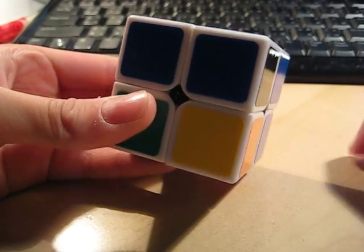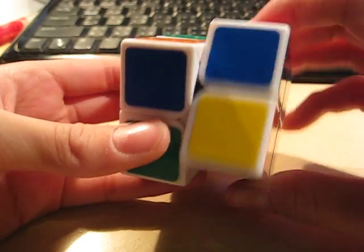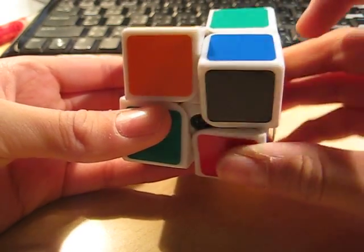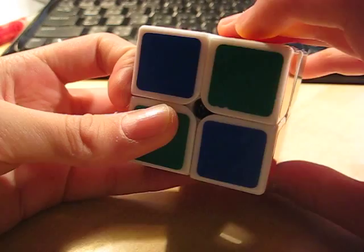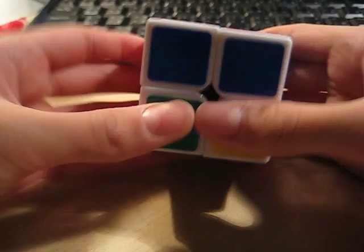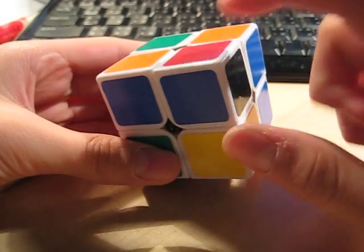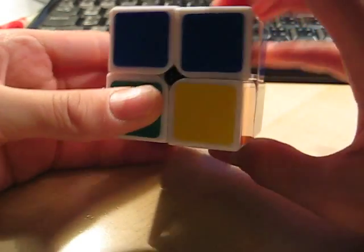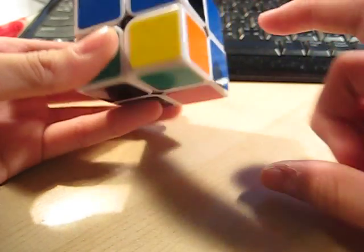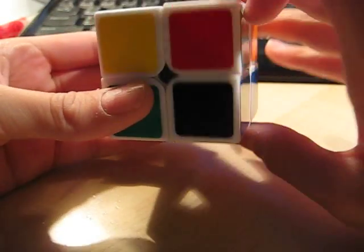And then all you have to do is memorize this simple sequence. R, U, R' U'. That's a simple sequence you're going to need to know. Mostly for solving the standard Rubik's cube, and many other puzzles. So you guys could place this corner on top, and keep on doing those moves, until the red appears right there.